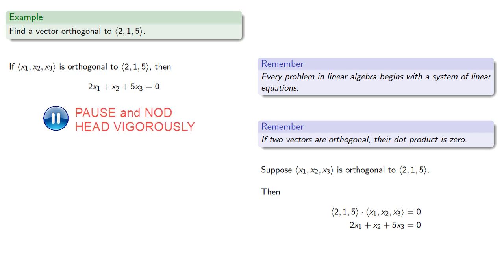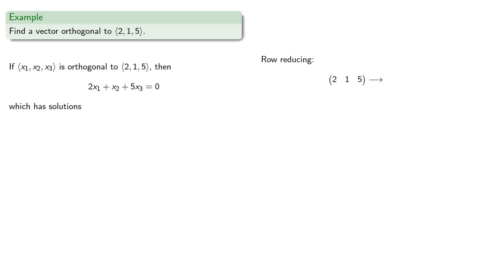and we can row reduce this. We'll do this quickly so pay attention, and we find that x2 and x3 are free variables, and x1 is basic, so we can parameterize them.